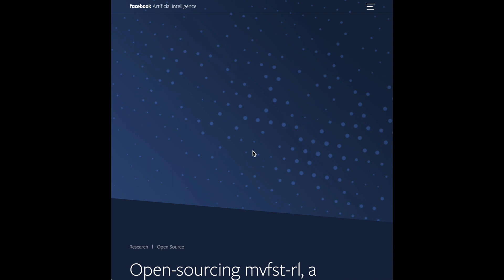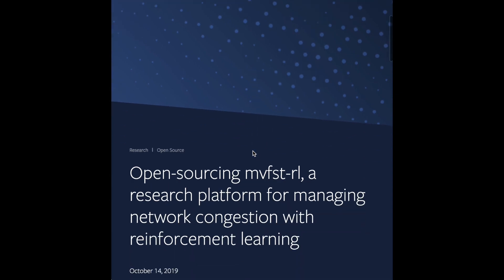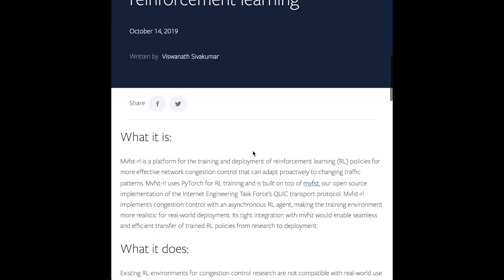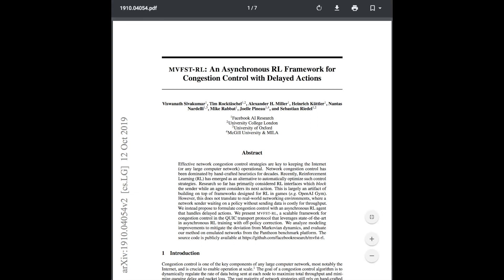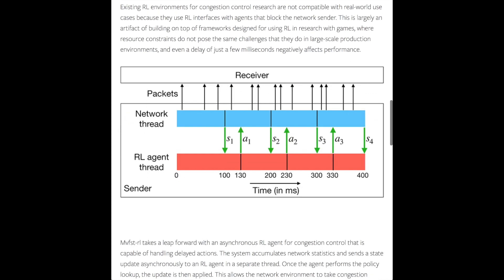Facebook's AI blog is also announcing the open sourcing of MVFST-RL, a research platform for managing network congestion with reinforcement learning. An interesting aspect highlighted in the paper is the idea of reinforcement learning with delayed actions. Contrasting with something like OpenAI Gym where you can pause the world, insert your action, and resume, managing network congestion involves a real-time interaction system. This makes it a really interesting asynchronous reinforcement learning agent dealing with delayed actions — a concept definitely worth exploring further.